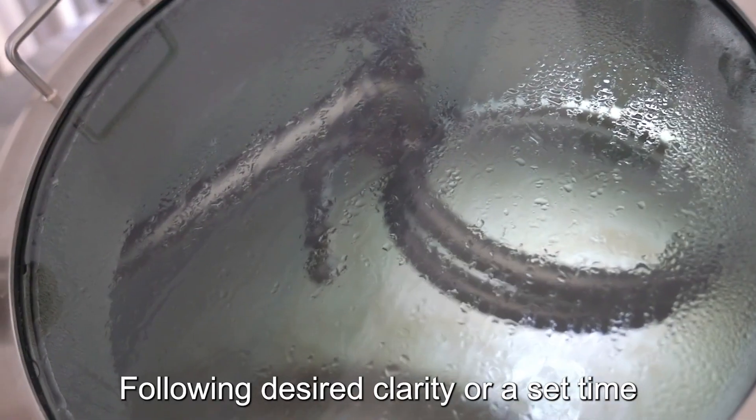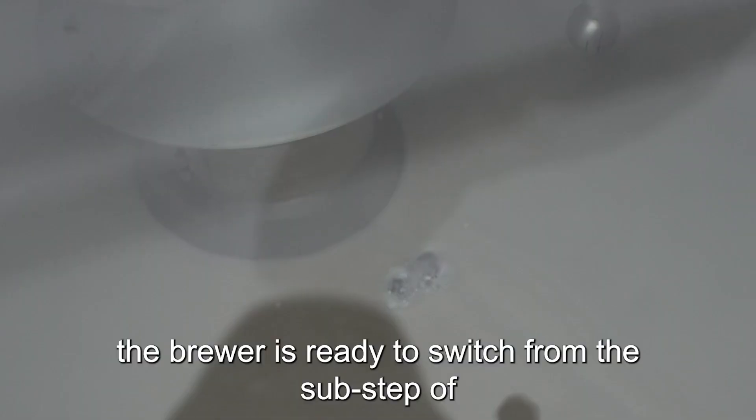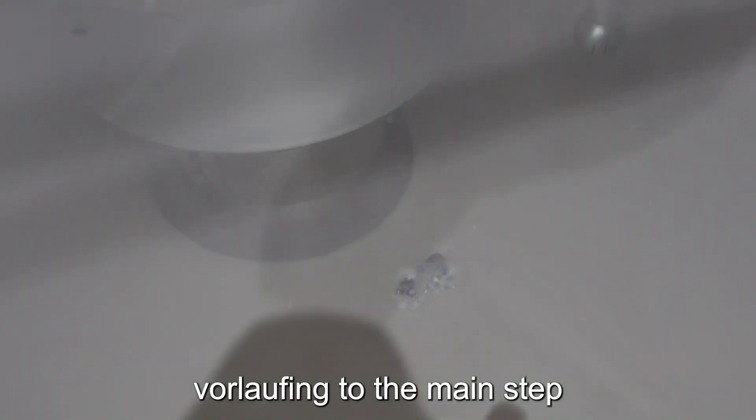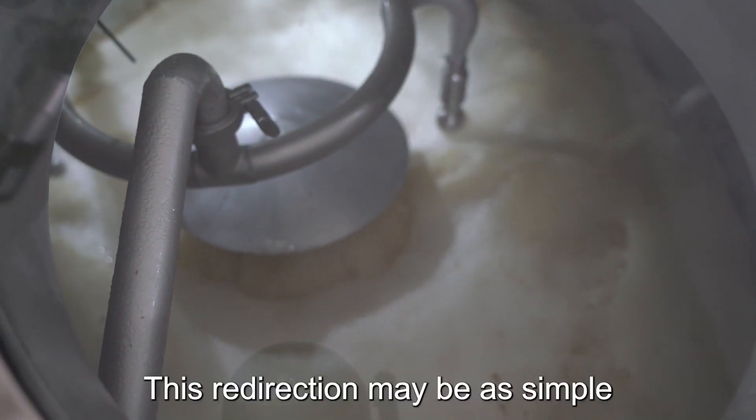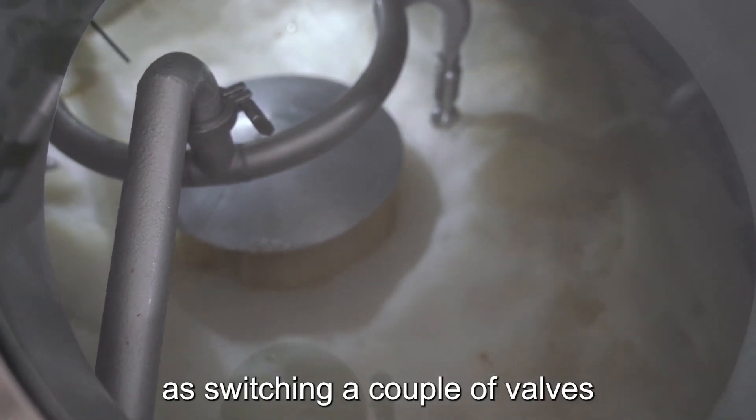Following desired clarity or a set time, the brewer is ready to switch from the sub-step of vorlaufing to the main step of lautering. Wort flow is redirected from the vorlauff loop to the boil kettle. This redirection may be as simple as switching a couple of valves.